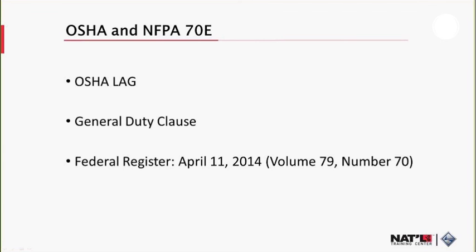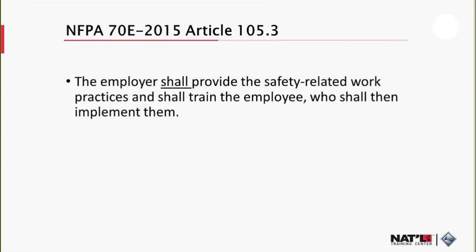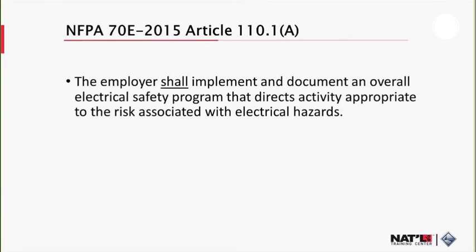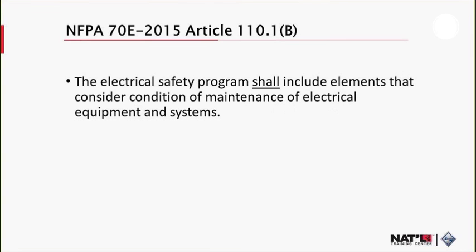NFPA 70E Article 105.3 (2015 version) states that the employer shall provide safety-related work practices and shall train the employee, who shall then implement these practices, and document an overall electrical safety program that directs activity appropriate to the risk associated with electrical hazards. In Article 110.1, the electrical safety program shall include elements that consider the condition of maintenance of electrical equipment and systems. This is new in 2015 — throughout the 70E 2015 edition, maintenance is now a major factor that must be considered as part of the electrical safety of the equipment.